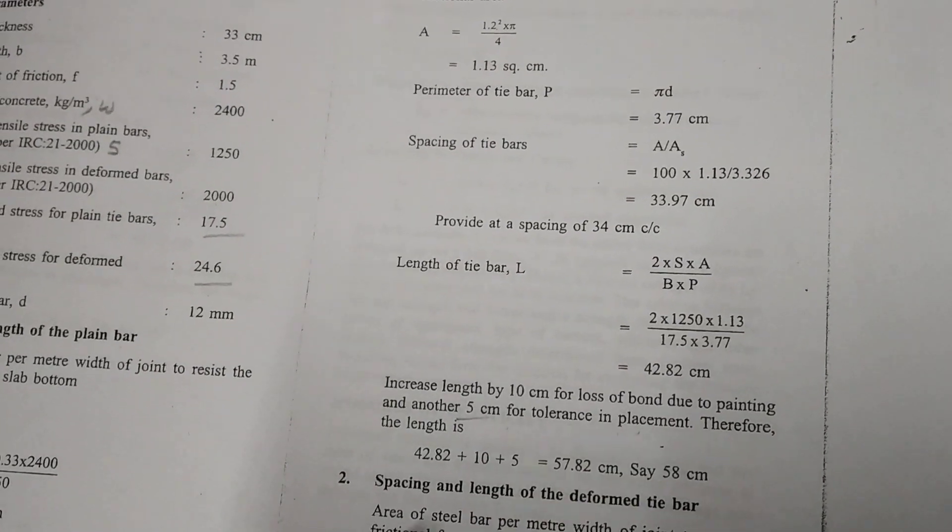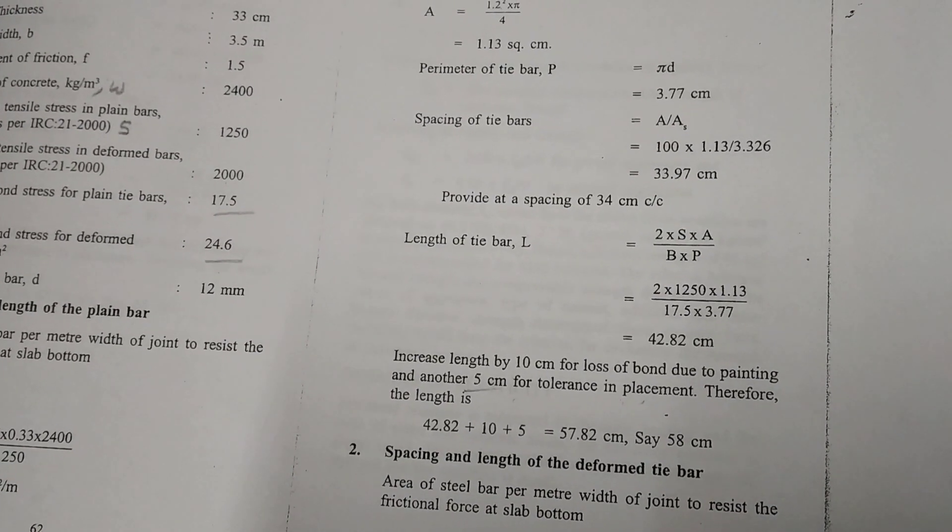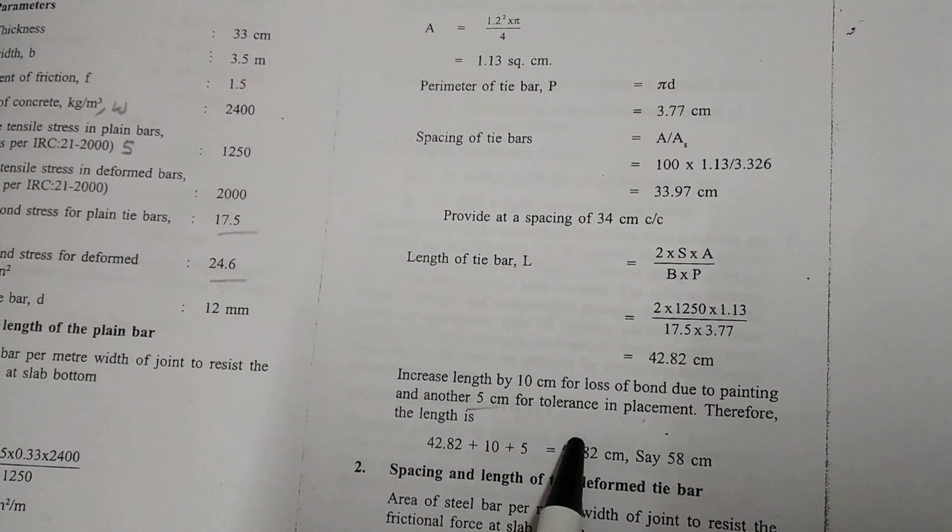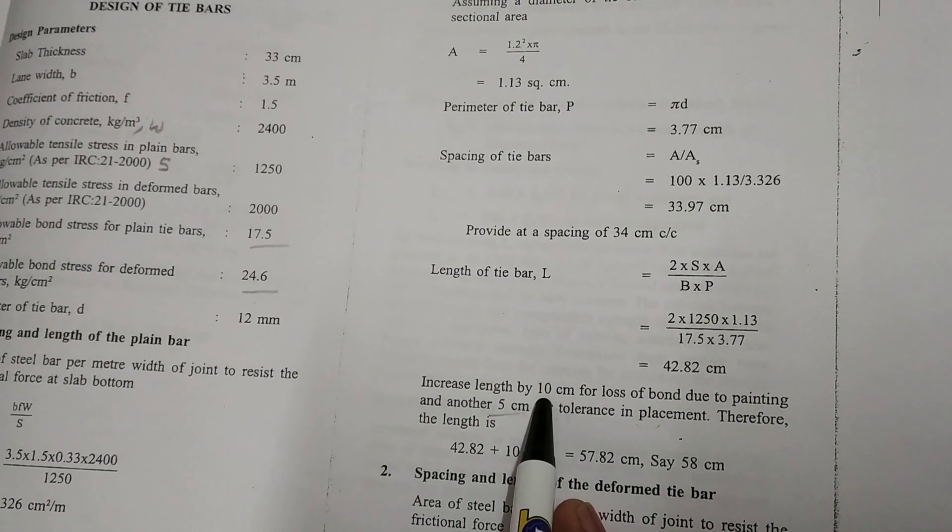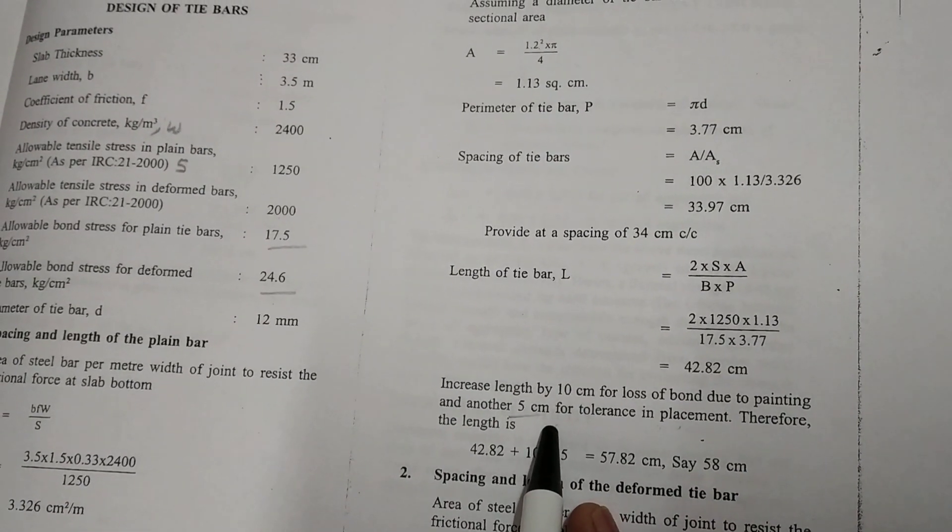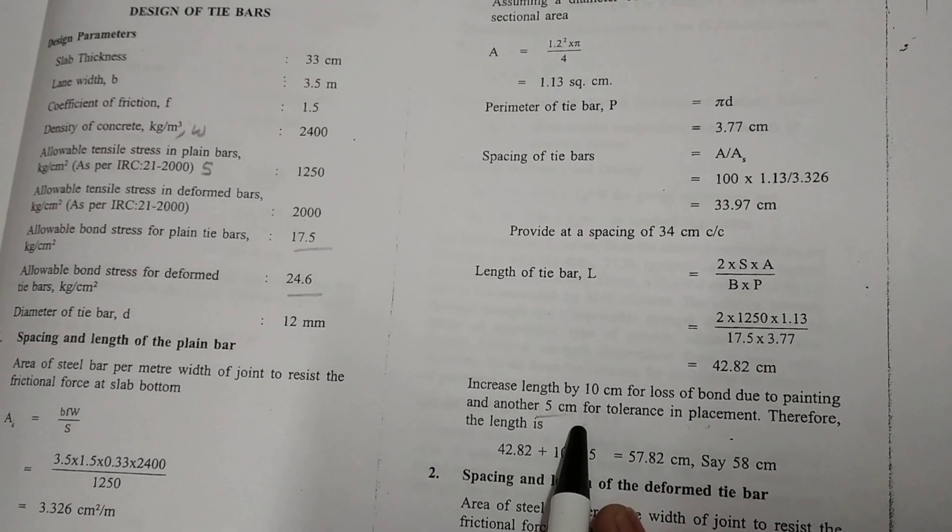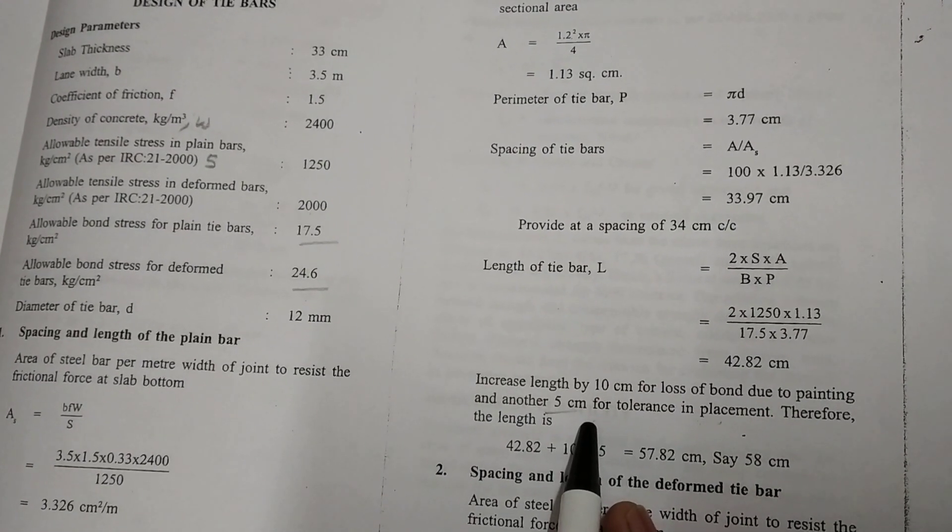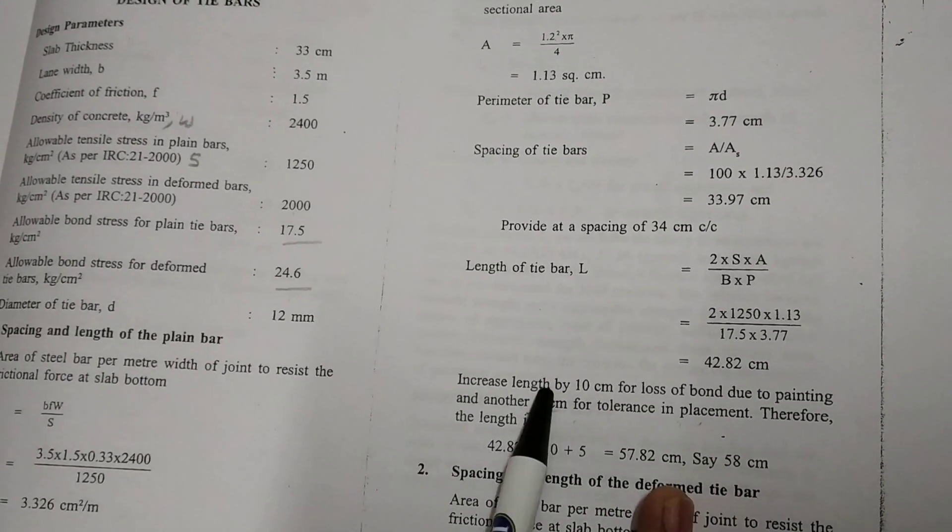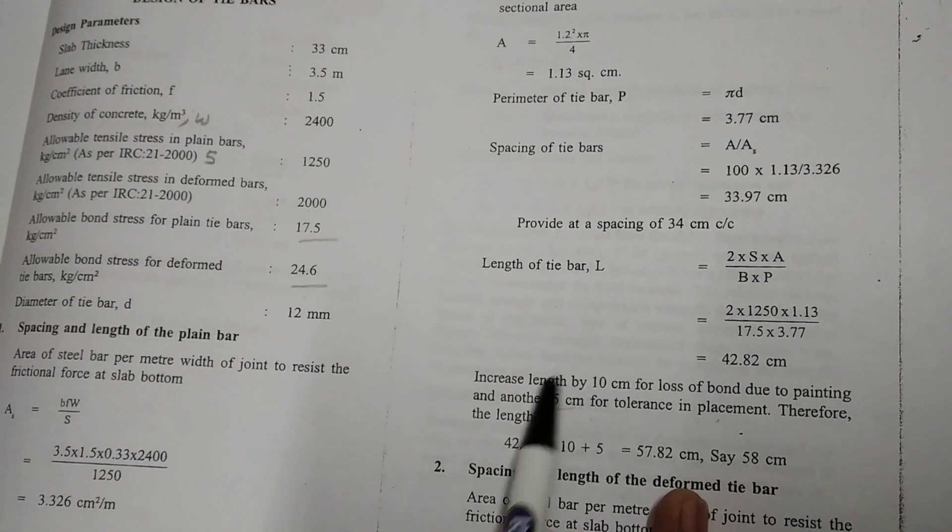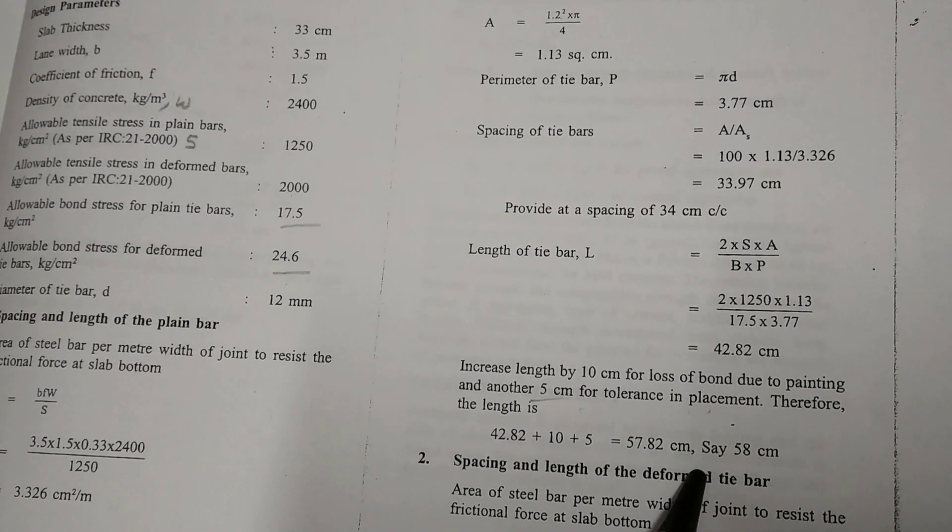Now we paint the bars to resist the rust. So there may be a chance of loss of bond between bars. So we take the tolerance value as 10 centimeter. And sometimes while placing the bar it gets distracted from its original place. We take the tolerance value for it as 5 centimeter. So add these two values. These are the standard values. Always add with the length of the tie bar. This will get the complete length of the tie bar.